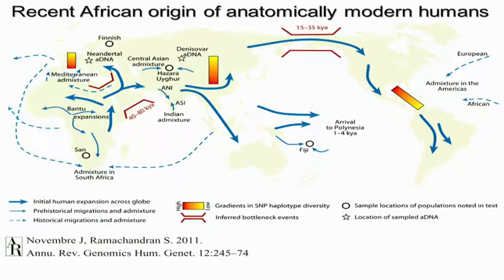One interesting question is what happened as humans went out of Africa and they encountered other groups. Well, they acted like typical humans — they exchanged DNA. A consequence of that is that for non-Africans today, we see about 1% to 4% contribution in their DNA from their Neanderthal ancestors.